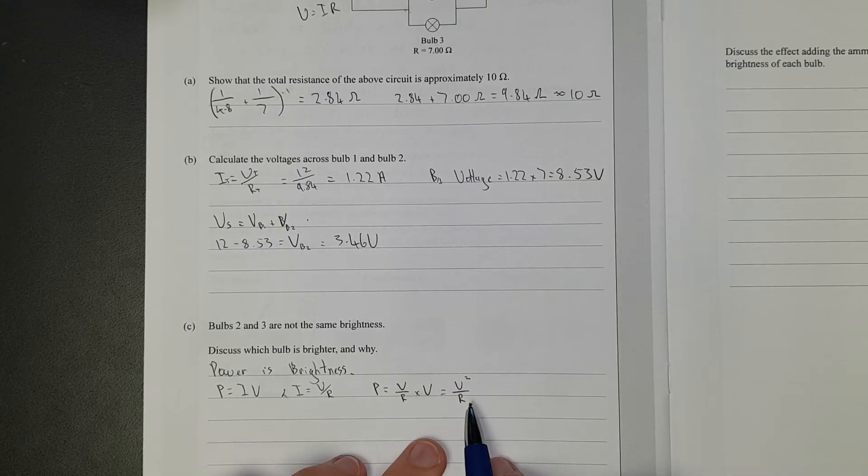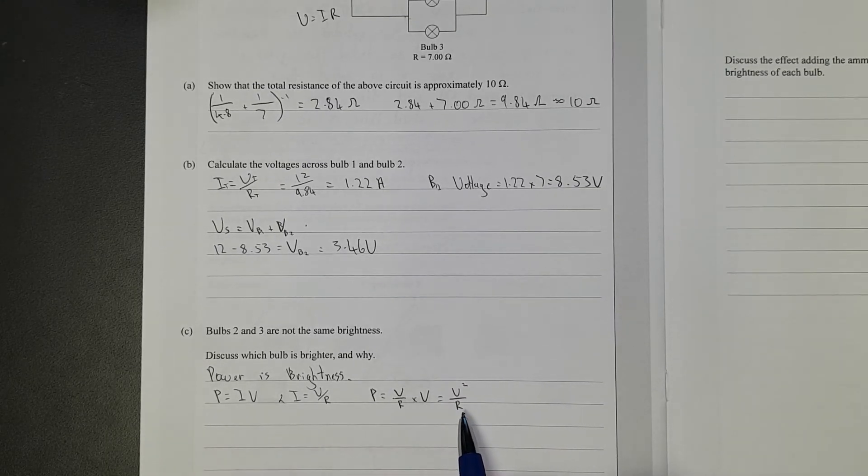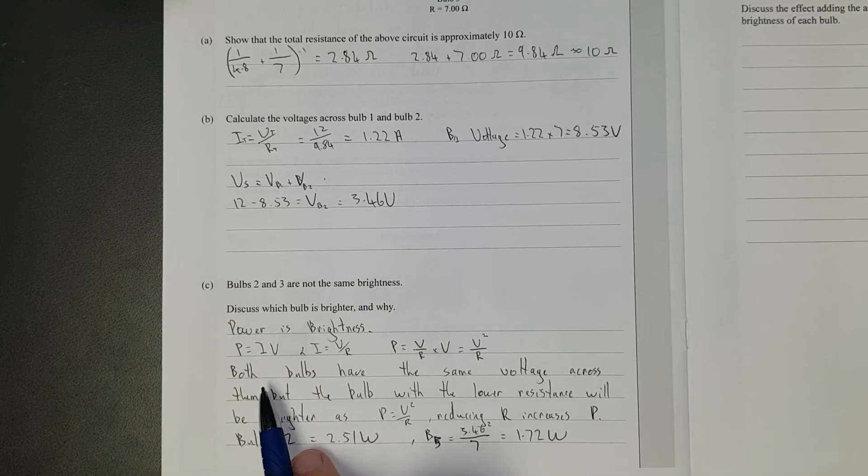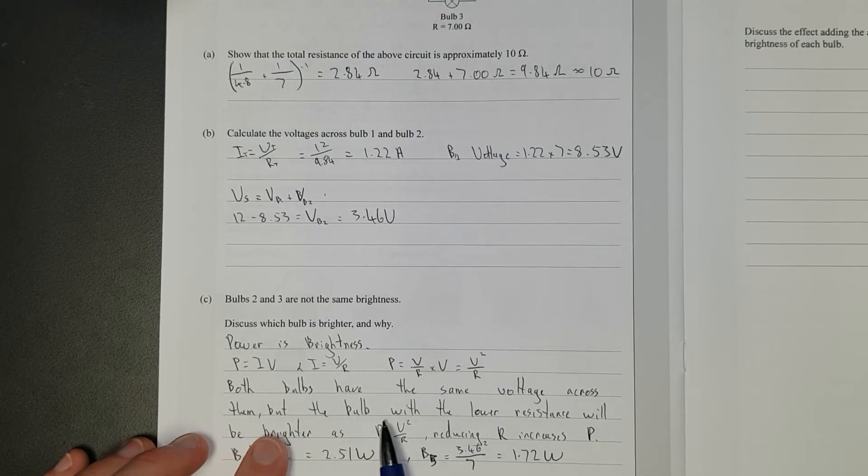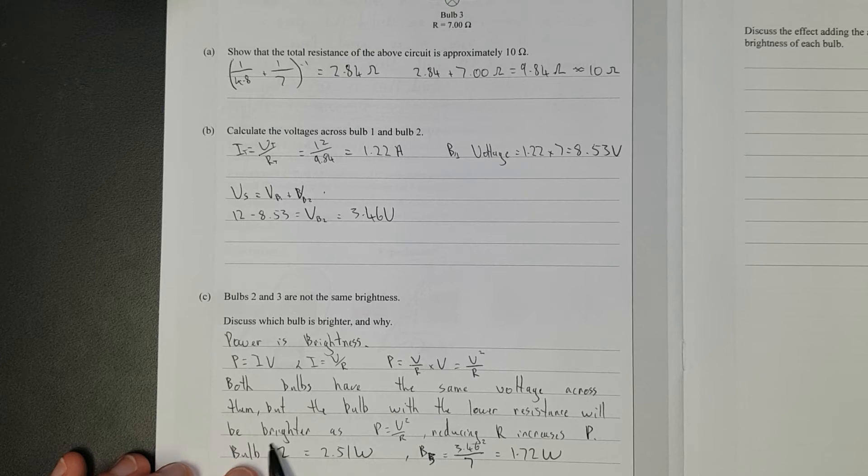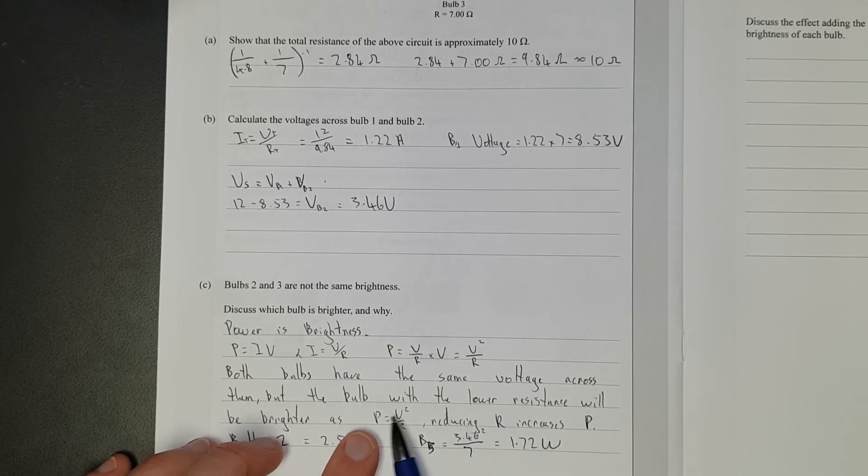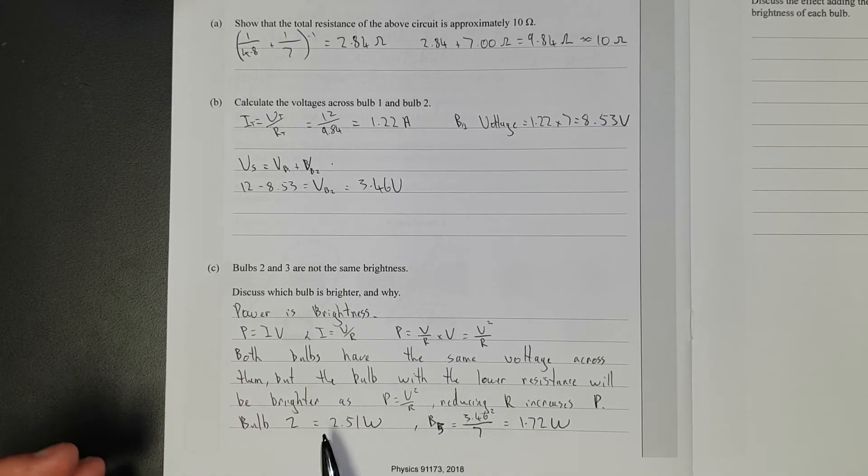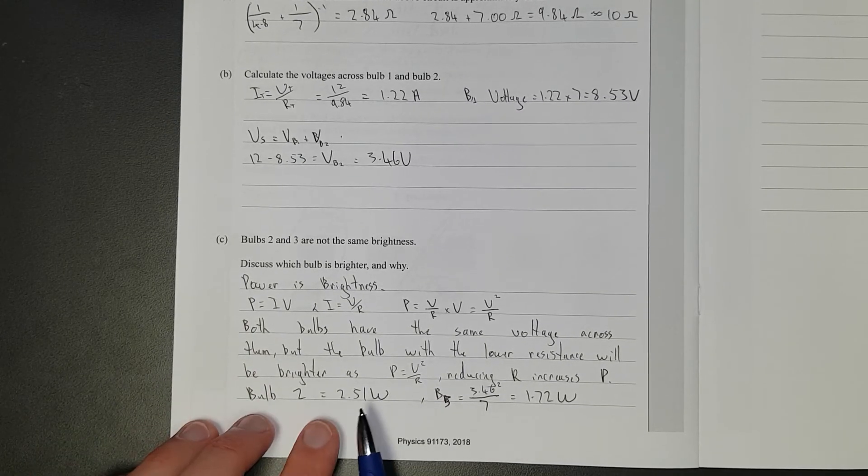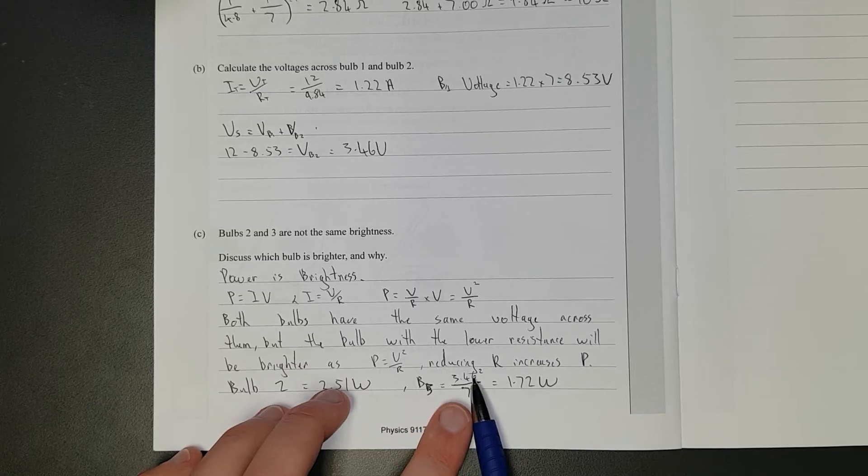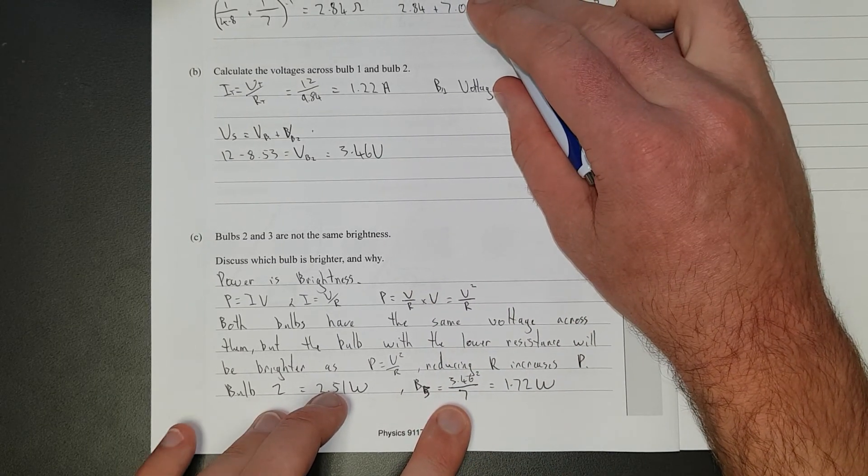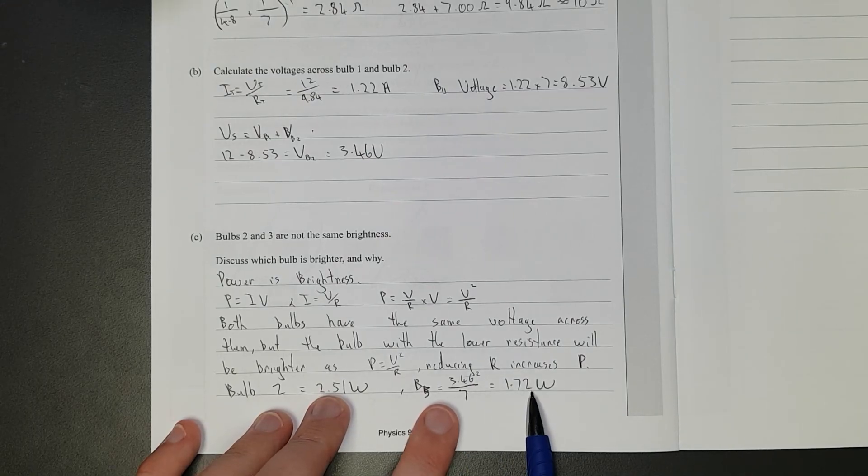Whatever's got the most voltage divided by the resistance is going to give me the most power. Right, so both bulbs have the same voltage across them, but the bulb with a lower resistance will be brighter. As we just derived, power equals voltage squared over R. Reducing the resistance increases the power. And I just calculated it out to double check. Bulb 2 is 2.5 watts. Bulb 3, the voltage squared, so 3.46, that's the voltage across 3 and 2, squared divided by 7 gives you 1.72. So it actually is true, that's less than that. Sweet.